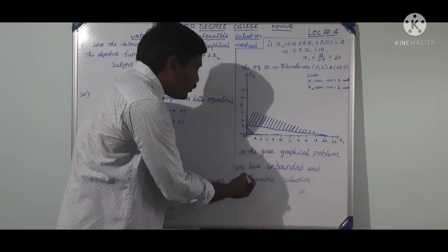Non-negative restrictions mean the solution variables are always positive values. Now, for equation 2: 0.5x1 plus 5x2 equal to 10.